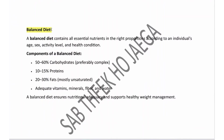The next sub-topic is Balanced Diet. A Balanced Diet basically means all essential nutrients in the right proportions according to an individual's age, sex, activity level, and health condition. Basic components are: 50–60% Carbohydrates, 10–15% Proteins, 20–30% Fats — mostly unsaturated — and adequate vitamins, minerals, fiber, and water. A Balanced Diet ensures nutritional adequacy and supports healthy weight management.